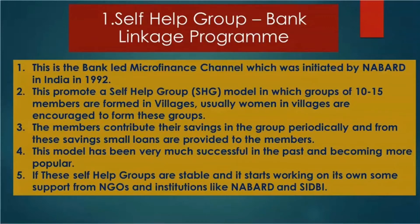In this model, the group is formed first, then members contribute — for example, 100 rupees each. With 10 members, that makes 1,000 rupees, which one member can take as a loan. The following week, 100 rupees is again collected. The member who took the loan repays it with interest — for example, 100 rupees plus 10 rupees interest, totaling 110 rupees per week for 10 installments. This model has been very successful and is becoming more popular.